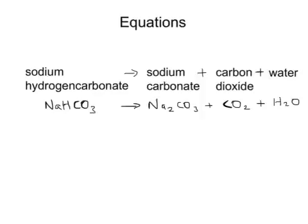In order to balance this equation, we count the number of particles on each side. On the right-hand side there are two sodiums, whereas on the left there is only one. So we need to put a two in front of the whole sodium hydrogen carbonate to give us two sodiums. This now gives us two hydrogens, and we've got two hydrogens on the other side — that's fine. We've also got two lots of carbon on each side. And we've got three times two, which is six oxygens: three plus two plus one makes six. So it now balances.